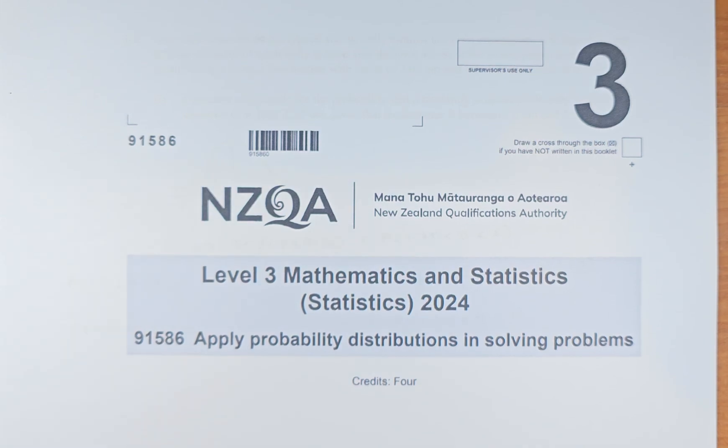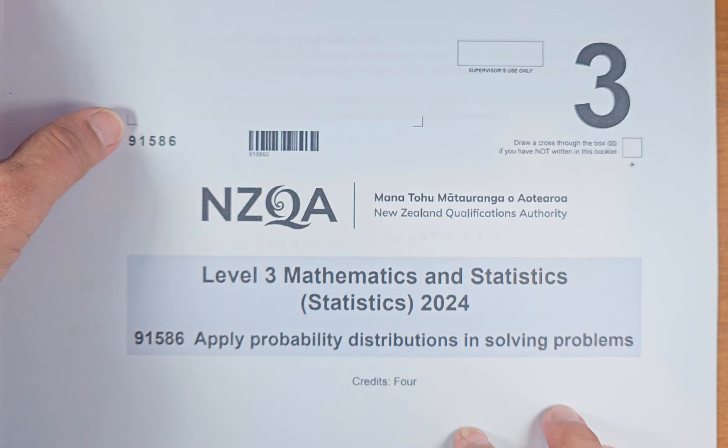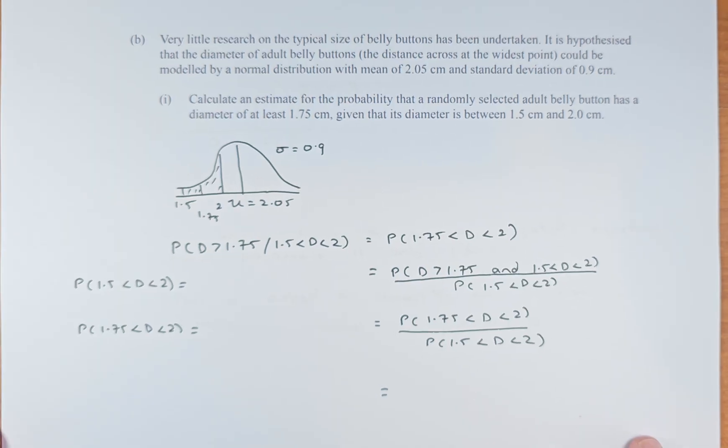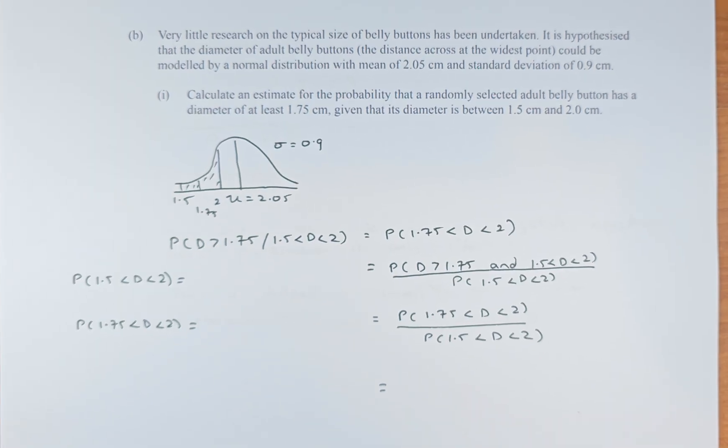Good day! In this video, we are going to try and solve question 1B of the 2024 NCEA Level 3 Apply Probability Distribution in Solving Problem. So without further ado, let's do part 1. There are two parts. You can answer both of them and you get an excellent. So we'll share with you the question.